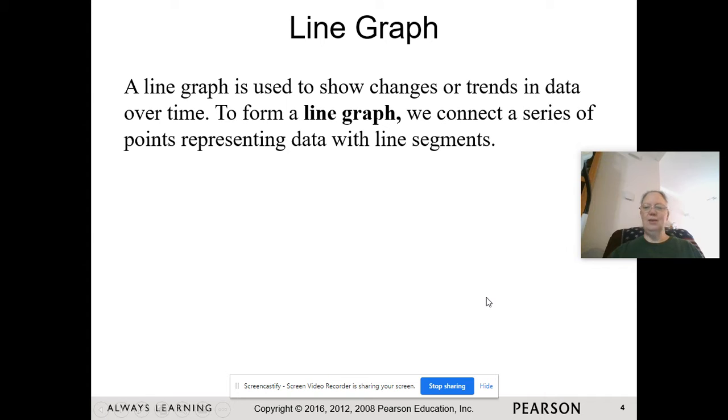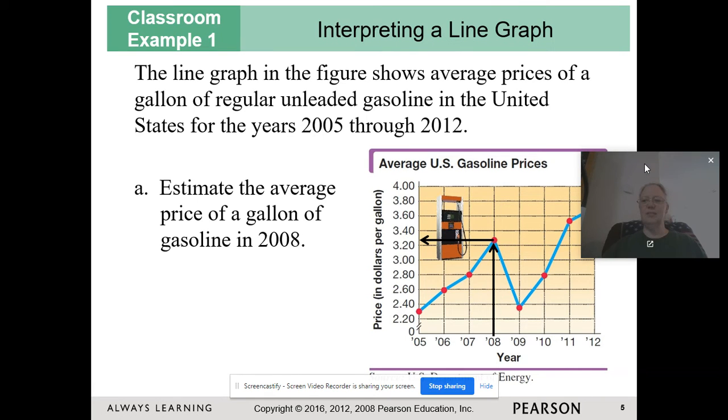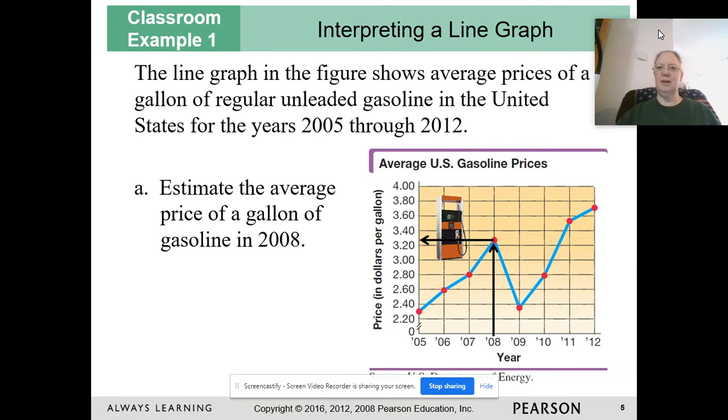A line graph is used to show changes, trends, and data over time. To form a line graph, we connect a series of points representing data with line segments. This is an example of a line graph that you might see in a news article.